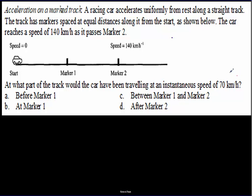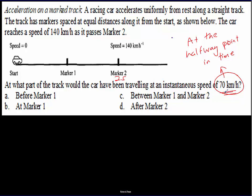With constant acceleration, the car reaches 70 km/h at the halfway point in time — say, one second if it takes two seconds total to reach 140 km/h. But at the start it's going slower, so it covers less distance per second. Therefore, at the halfway point in time, the car is before the halfway marker — it's somewhere in the first half of the distance.